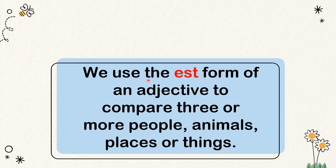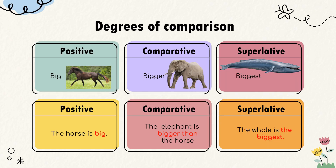We use the EST form of an adjective to compare three or more people, animals, places, or things. The change in the level of comparison is known as the degree of comparison: positive, comparative, superlative — for example, big, bigger, biggest.